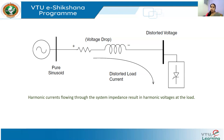The voltage distortion at the load side is a result of distorted current. The supply voltage is a pure sine wave, the transmission system is linear, but the load side has a non-linear circuit. Because of the non-linear load, there is a distorted load current. This distorted current passing through the linear series impedance causes a voltage drop for each harmonic component, resulting in voltage harmonics appearing at the load bus.